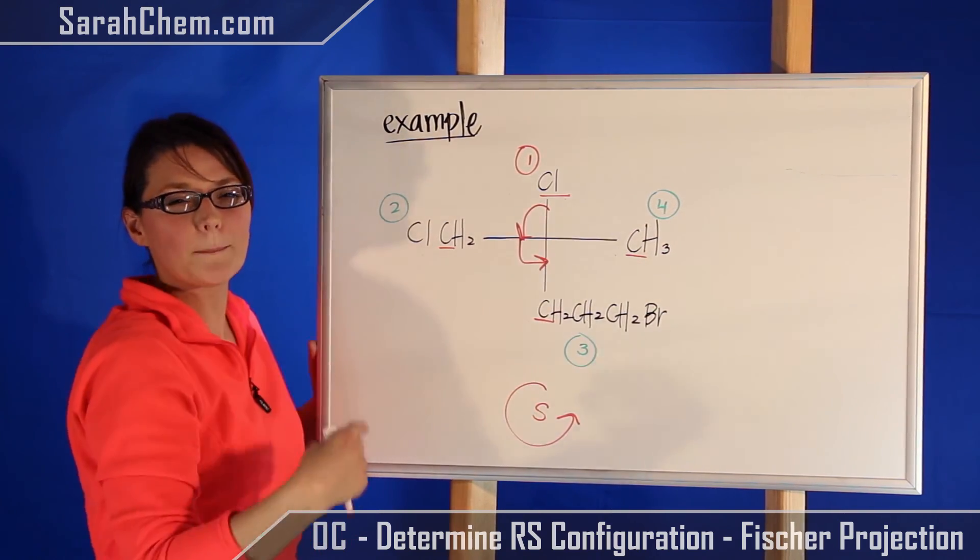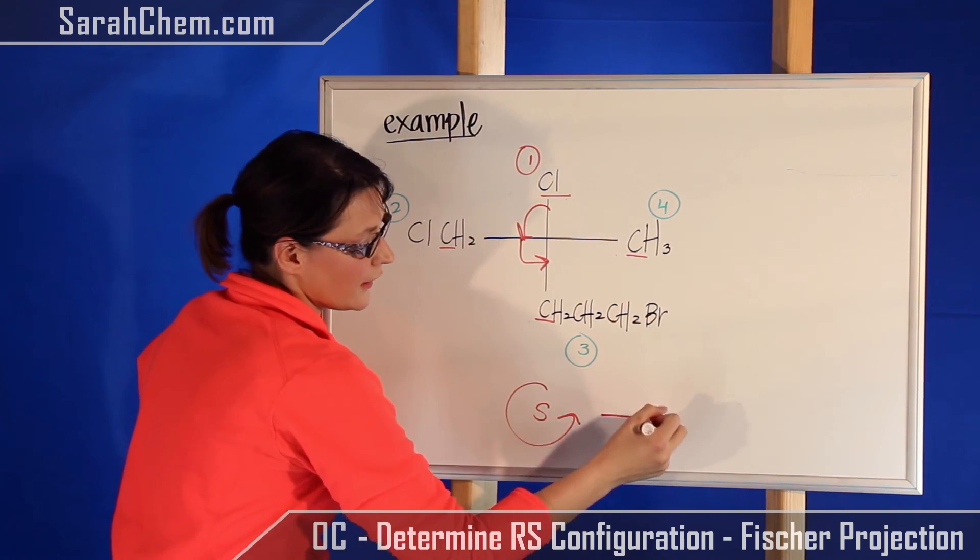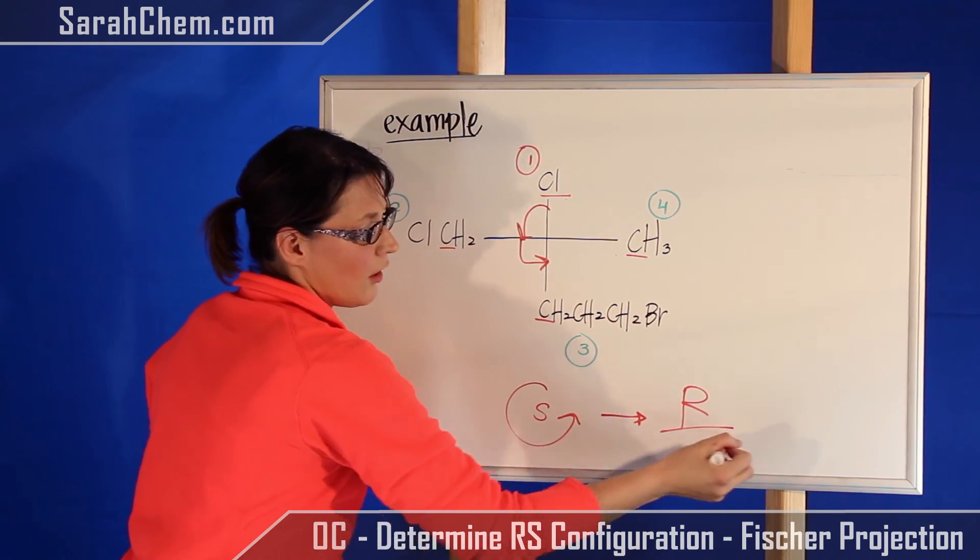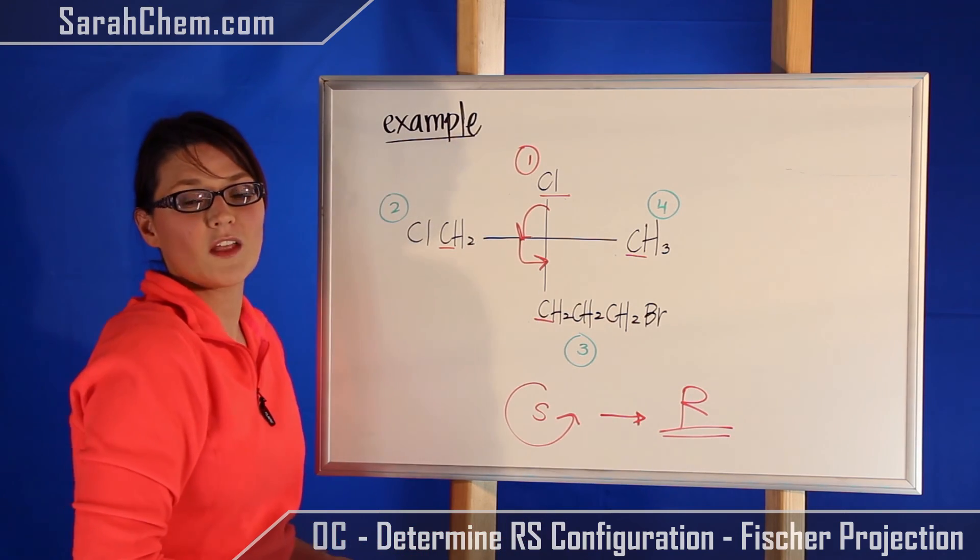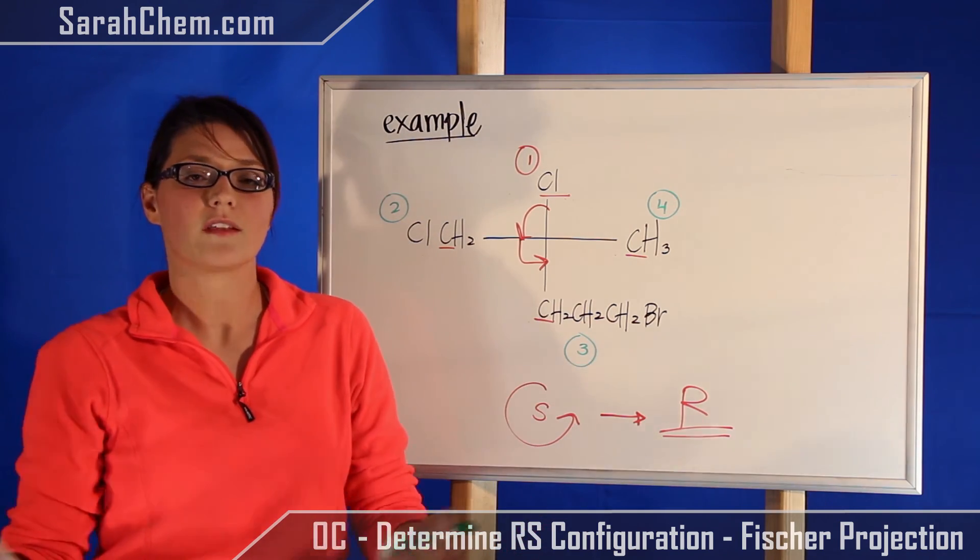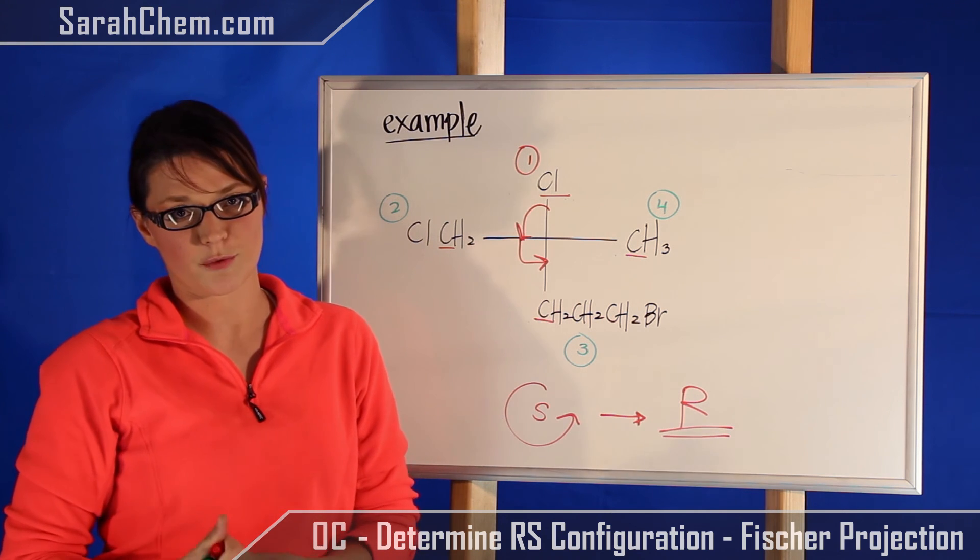Remember bad because it's the opposite to what we would normally think. So that means that this is not in fact an S, we would actually call this an R configuration. So those are how you would deal with figuring out your R and S configuration for this part of Fischer Projection.